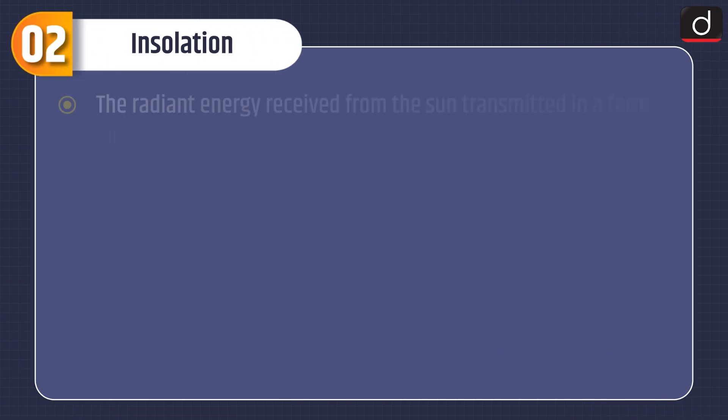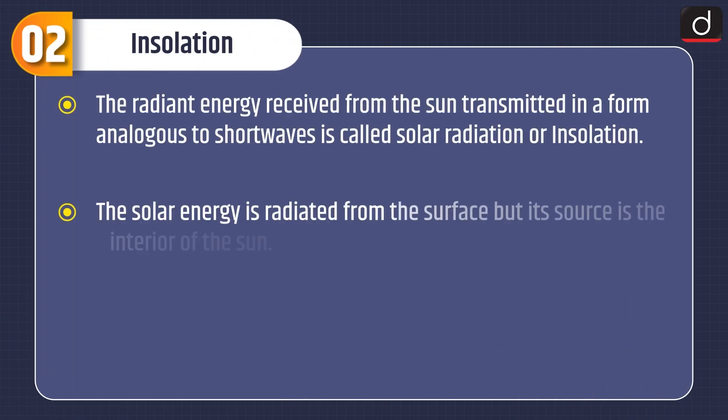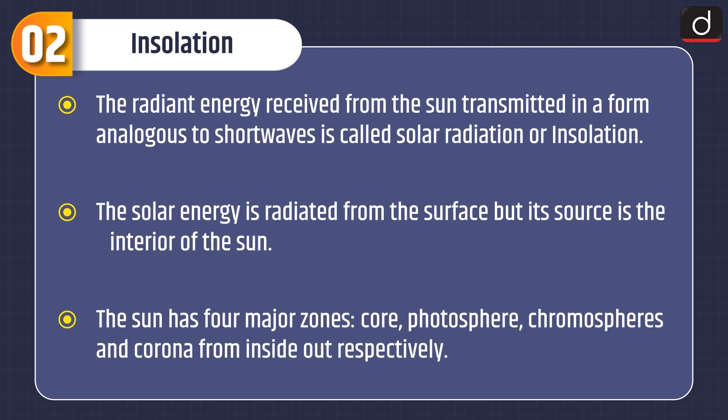The radiant energy received from the sun, transmitted in a form analogous to short waves, is called solar radiation or insolation. The solar energy is radiated from the surface, but its source is the interior of the sun. The sun has four major zones: core, photosphere, chromosphere, and corona, from inside out respectively.